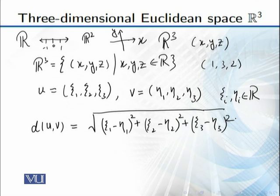Then R³ with this distance function is a metric space. It means that d will satisfy all four properties. This completes the definition of R³ as a metric space. Let's move on.